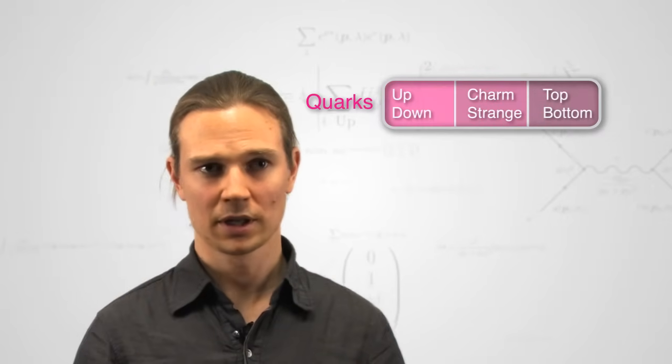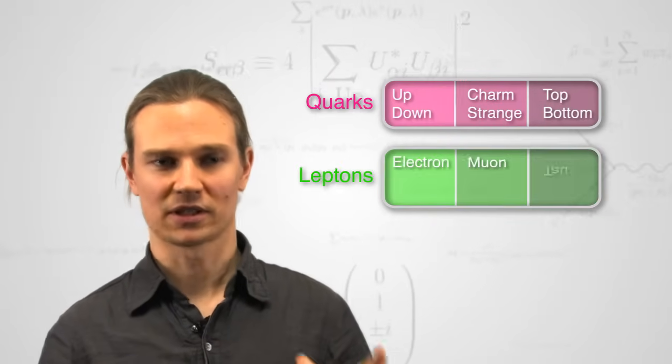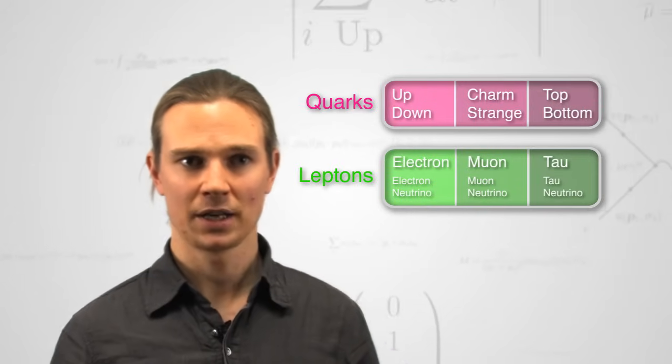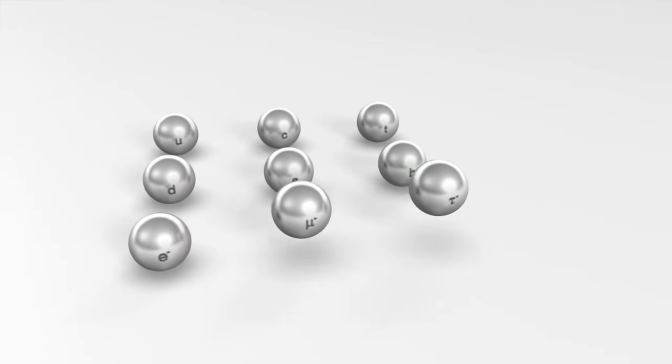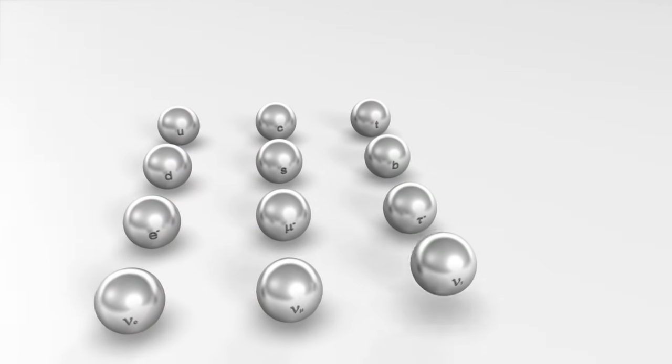In addition to these quarks, there's another set of fundamental building blocks of matter, the so-called leptons. They are composed of an electron, their heavier cousins, the muon and the tau, and their neutrino partners.